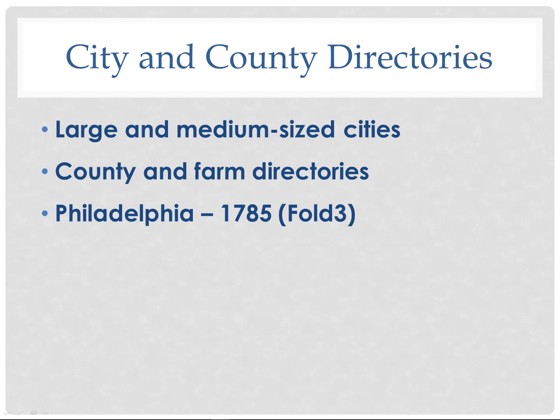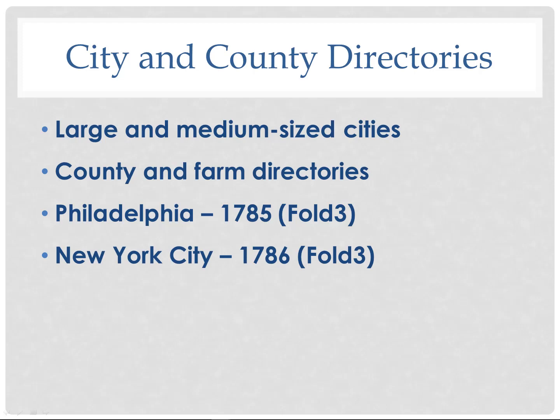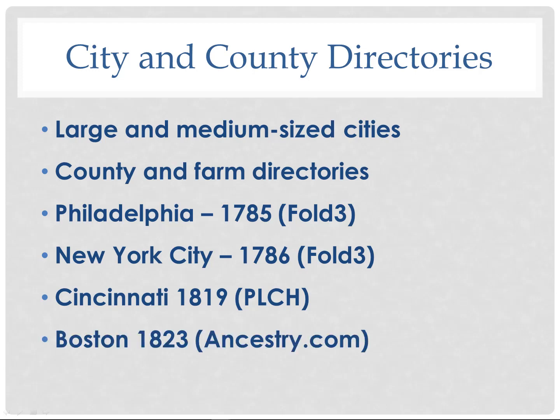The oldest directory I found was for Philadelphia in 1785, with a New York City directory a year later. The oldest Cincinnati directory I located was from 1819, held at the Public Library of Cincinnati and Hamilton County, and Ancestry.com has a Boston directory from 1823. City directories were around for quite a long time and fill in years between censuses, making them very helpful in tracking ancestors through time.